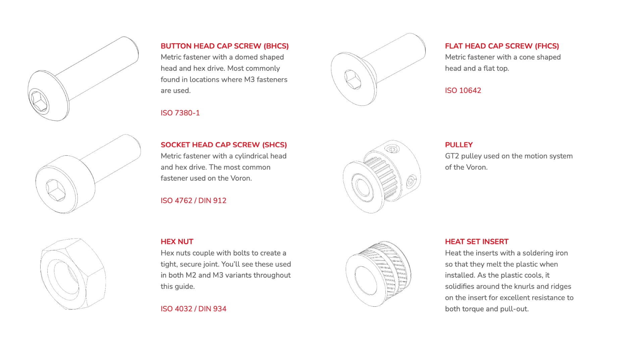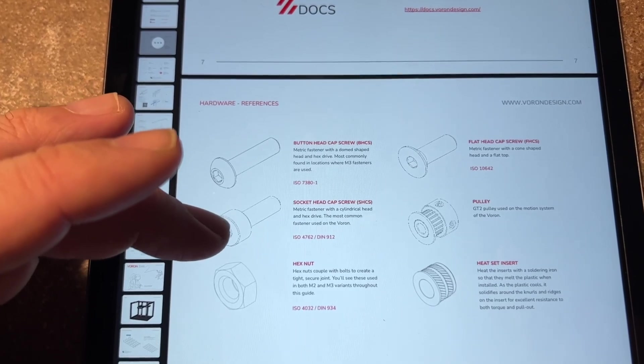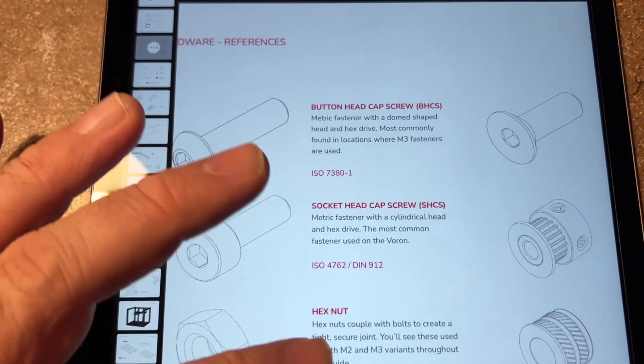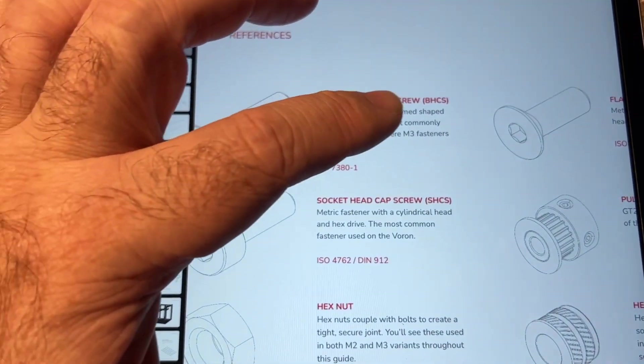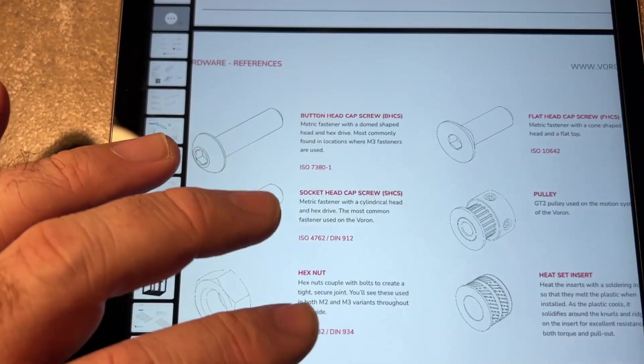The next part of the manual, around page 8, talks about the various different types of fasteners. Here you can see we've got button head, socket head, and those are all abbreviated accordingly, so you might see BHCS or SHCS. That's what that means.